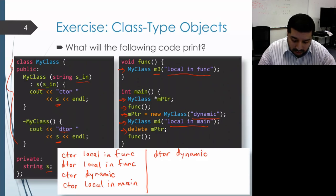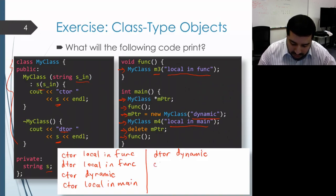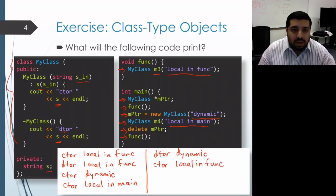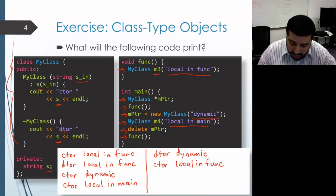Moving on in main, we have another call to func. We already know what happens there — we have a local MyClass object created with the string "local in func", so we get CTOR local in func. Then when func is returning, that local object's lifetime ends, so the destructor is invoked on that object and that prints out DTOR local in func.